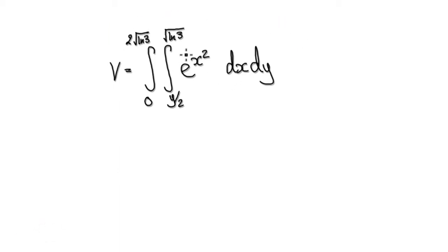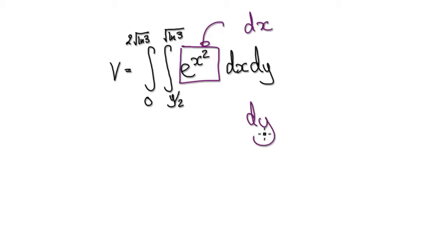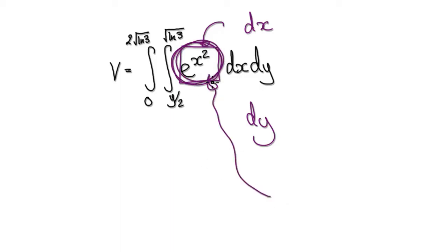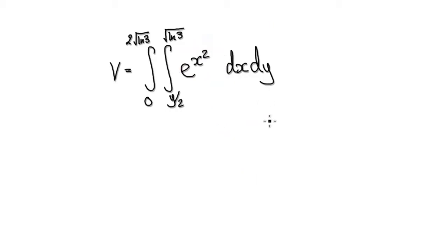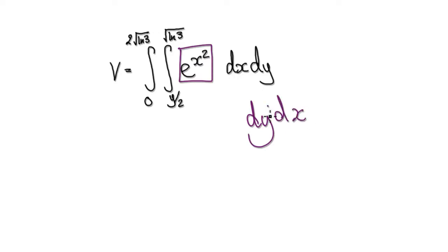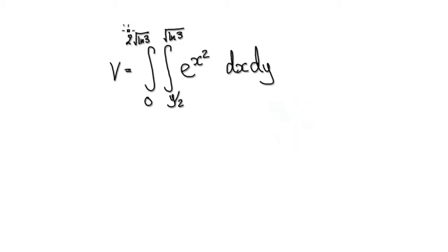So to do this, the question is: do you want to integrate with respect to x first or with respect to y first? From calculus 2, we've seen there's no easy way of integrating this — we had to use series. So if we integrate with respect to y first, we can treat this whole block as a constant. So we need to integrate with respect to y first and then with respect to x. But before we can do that, we need to understand the region we're integrating over.